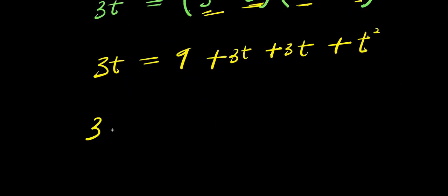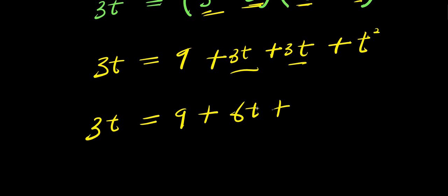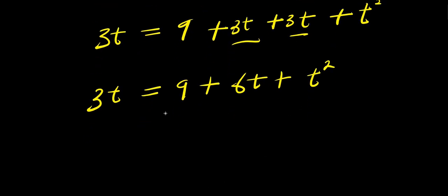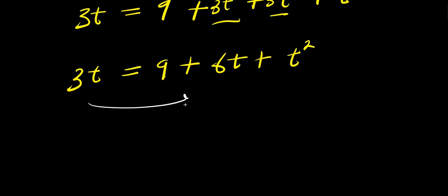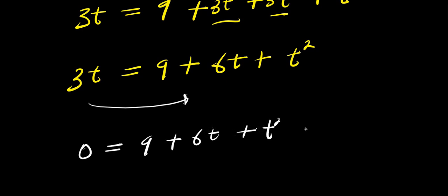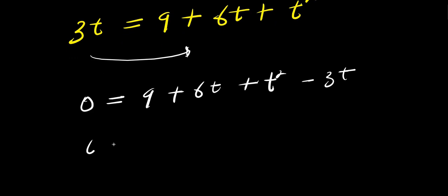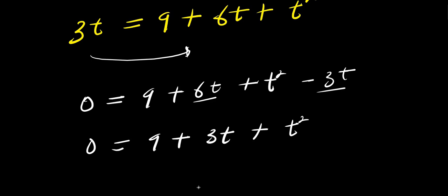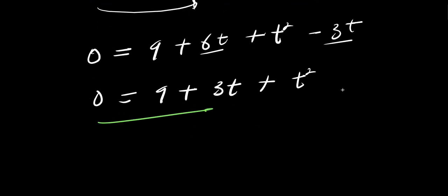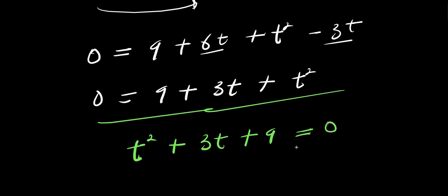So from here, 3t equals 9 plus 6t plus t squared. Moving 3t over, I have 0 equals 9 plus 3t plus t squared. Rearranging, I have t squared plus 3t plus 9 equals 0.